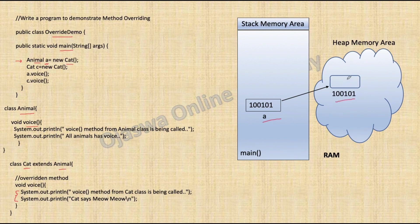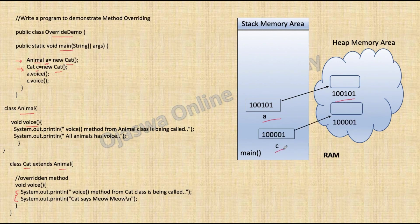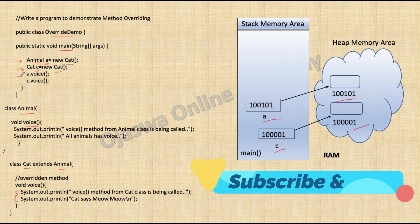The next statement creates an object of type Cat: cat c = new Cat. Here the object is of type Cat and the reference variable is also of type Cat. This is a regular object, what we do regularly. Inside memory, c will have its memory reserved on the stack and the object is created on the heap.